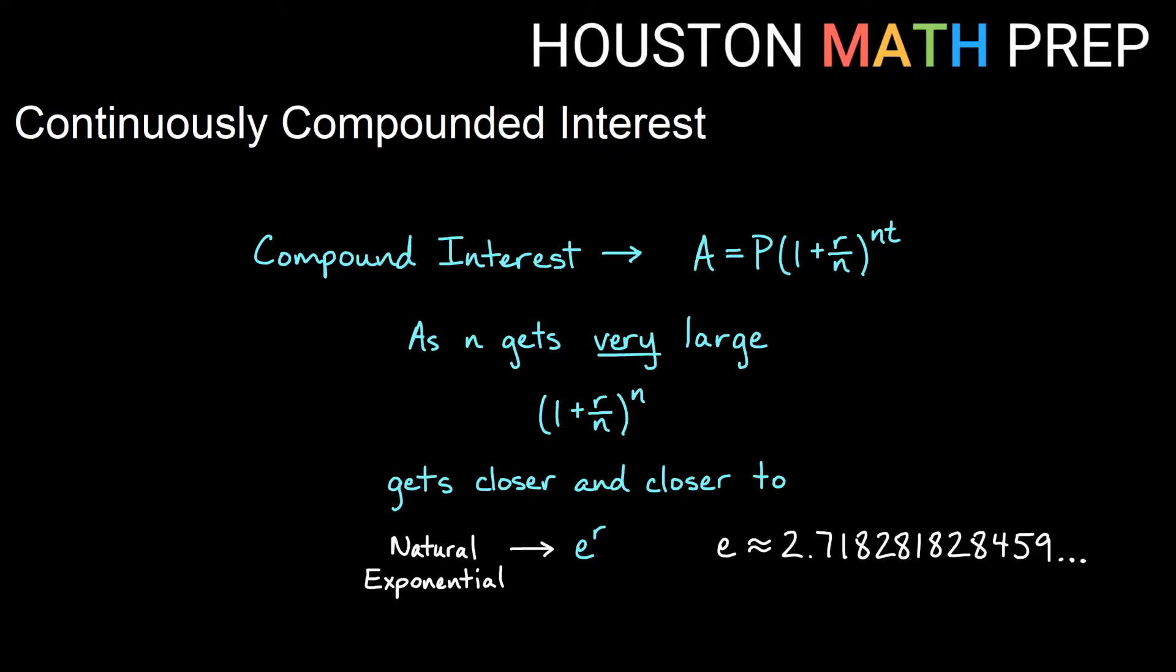Welcome back everyone, Houston Math Prep here. In our previous video in this series we looked at compound interest and the formula for that, and then we looked at the natural exponential, this number e that's very special to us in math, and we noticed that as we compounded more and more often in a year, when we took one dollar at a hundred percent interest, we got closer and closer to this number.